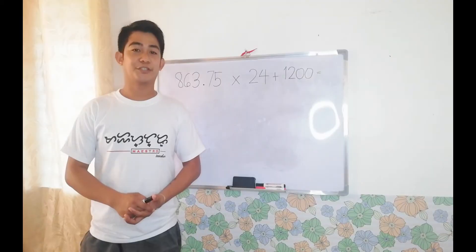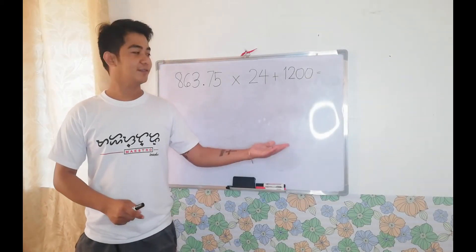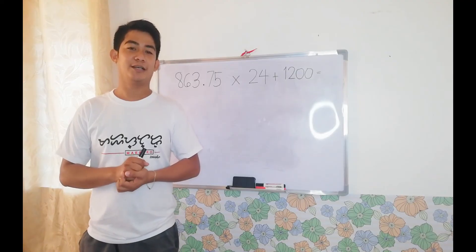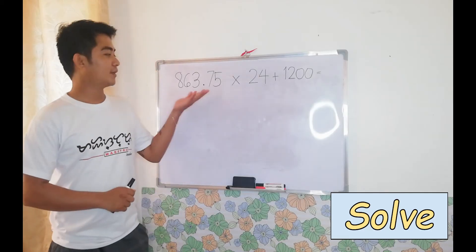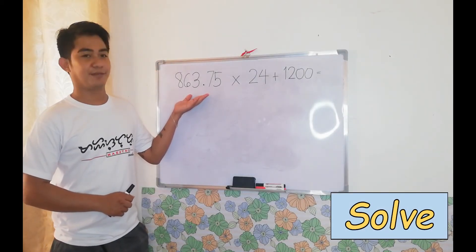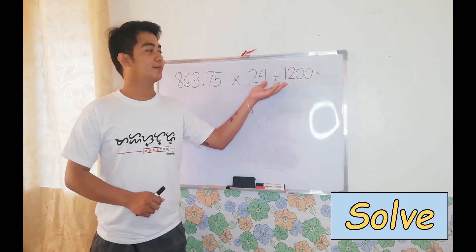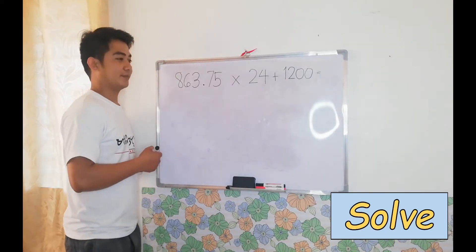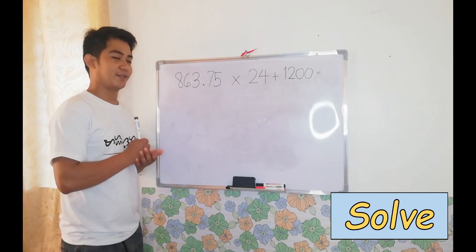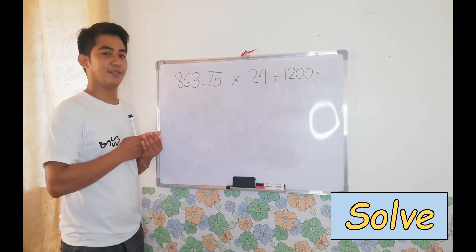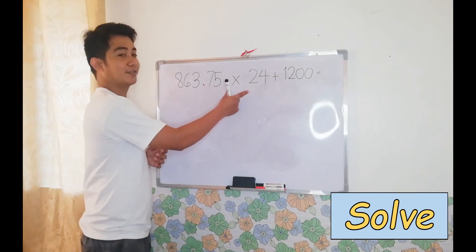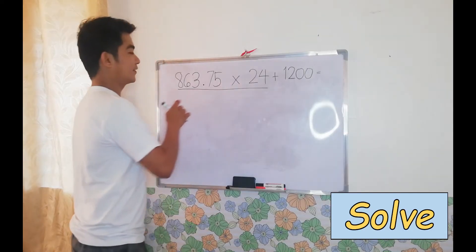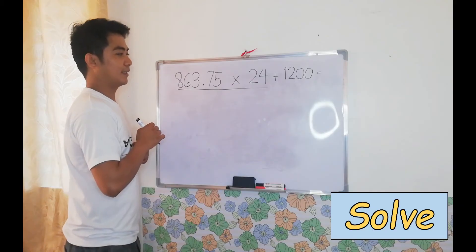The third step in solving word problems is Solve. After getting our number sentence, we now apply it: 863 pesos and 75 centavos times 24 months, plus 1,200 pesos as initial payment. Recalling PEMDAS — parenthesis, multiplication, division, addition, and subtraction — we will do multiplication first. We're going to multiply 863 and 75 hundredths times 24.